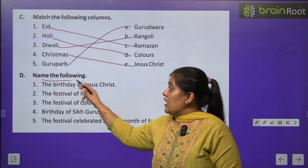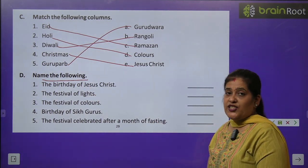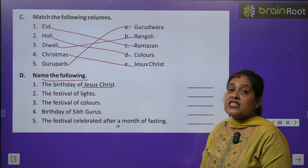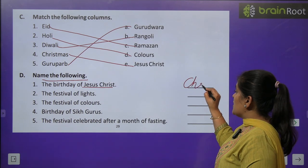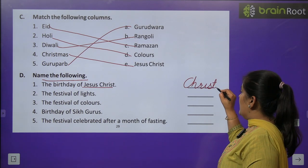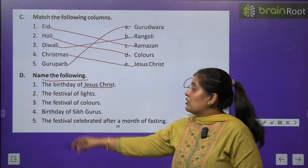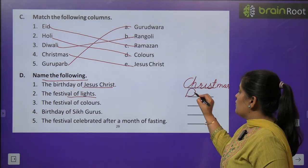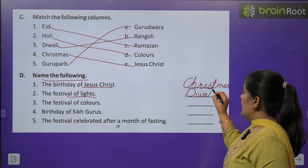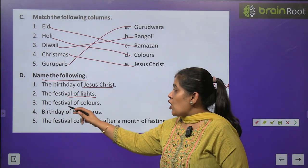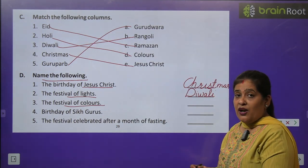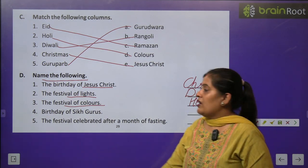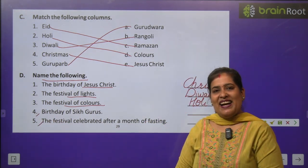Exercise D: Name the following. Number 1: The birthday of Jesus Christ — answer: Christmas. Number 2: The festival of light — रोशनी का त्योहार — answer: Diwali (D-I-W-A-L-I). Number 3: Festival of colors — रंगों का त्योहार — answer: Holi (H-O-L-I). Numbers 4 and 5 you will do by yourself.